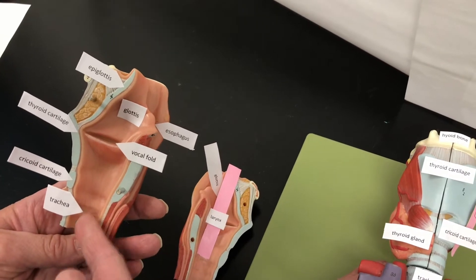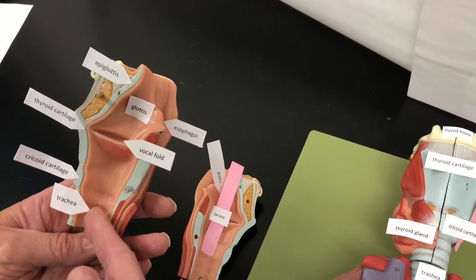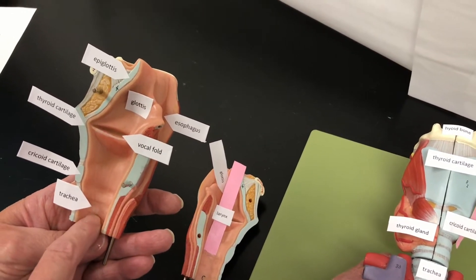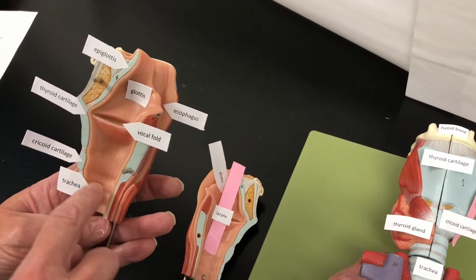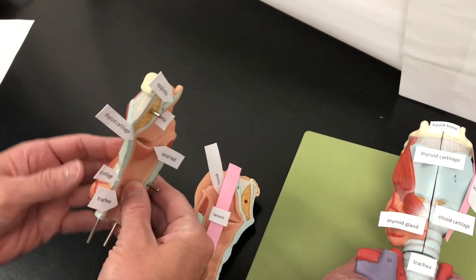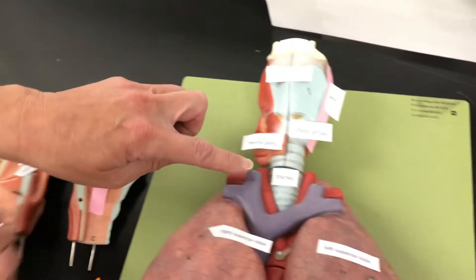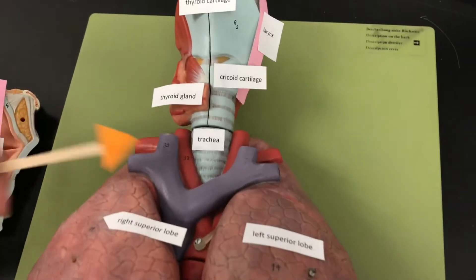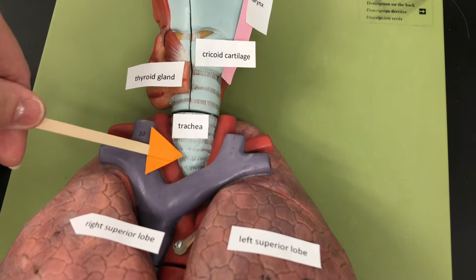Here's the trachea. So air is going to go down the trachea. These indentations represent the C-shaped cartilage rings that help keep the trachea open. So we can see those rings here on the trachea.